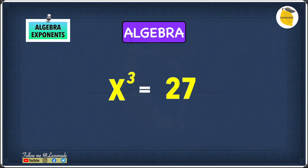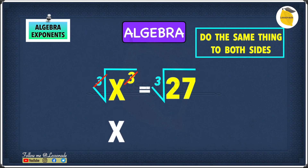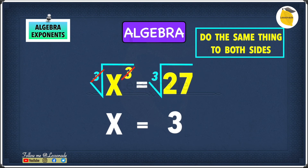Let's have a look at this example: x cubed equals 27. As you can see, we have a cube, so to undo it we do a cube root — and remember, do the same thing to both sides, so cube root the other side as well. The cube and the cube root cancel each other out, leaving us with x. The cube root of 27 gives us 3. You may wonder whether we also get a negative answer of minus 3, just like in the previous example.